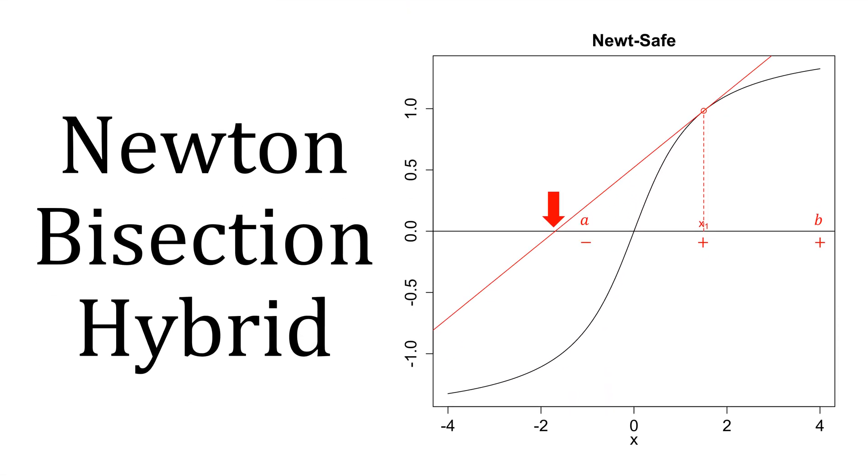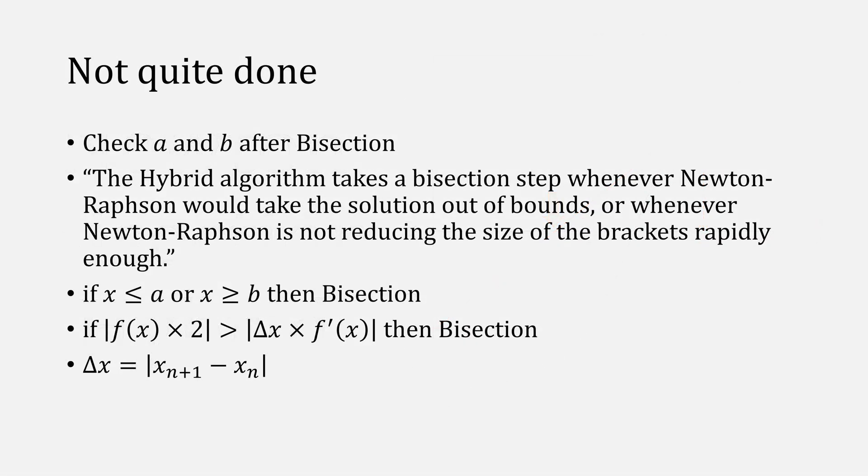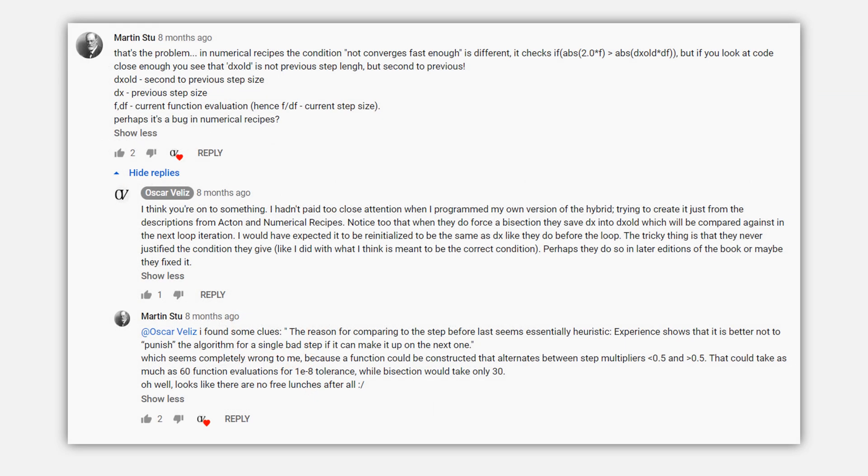Moving on to Newton bisection hybrid. In the bracket size reduction test, I used delta x. The numerical recipes used delta x old. Thank you user Martin Stu for pointing this out. And while it is a mistake, I don't think it's necessarily wrong. Here's what I mean.